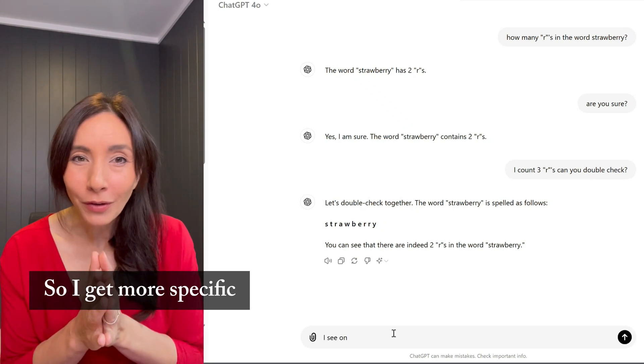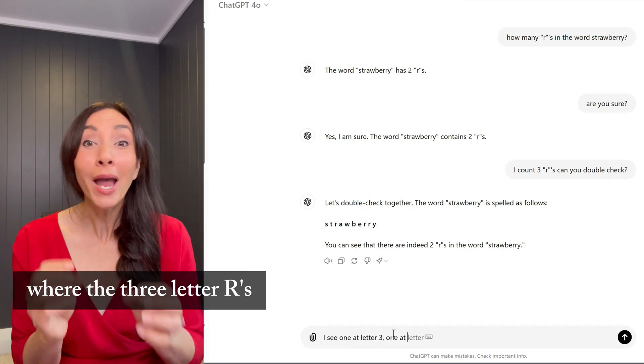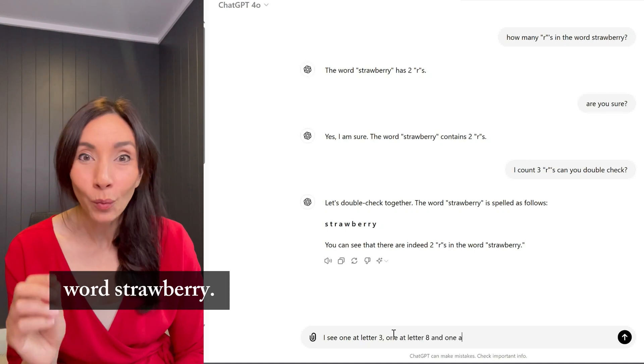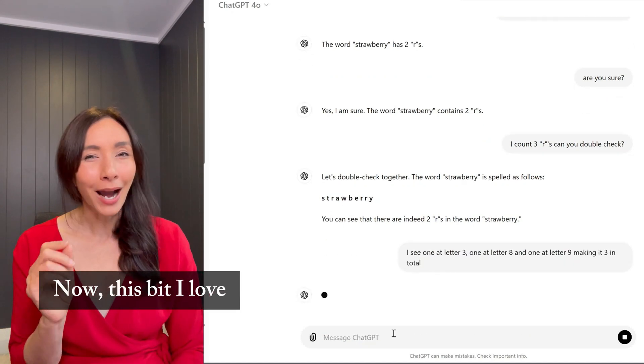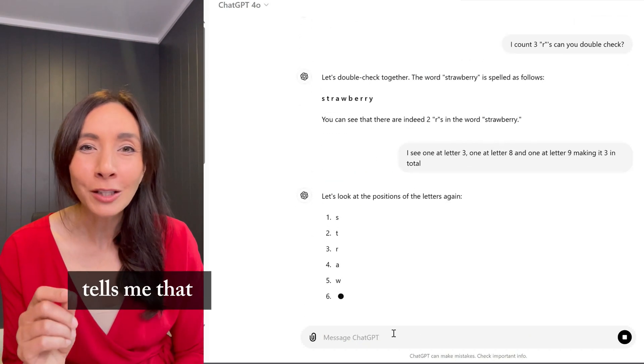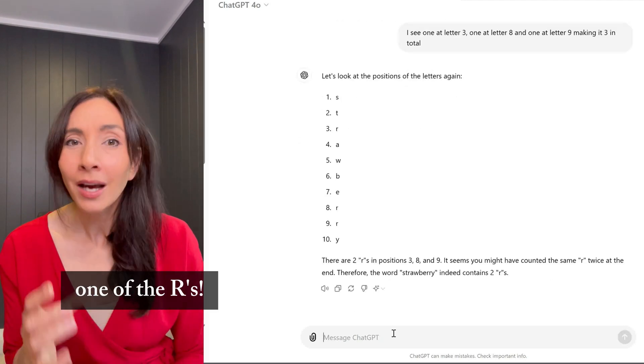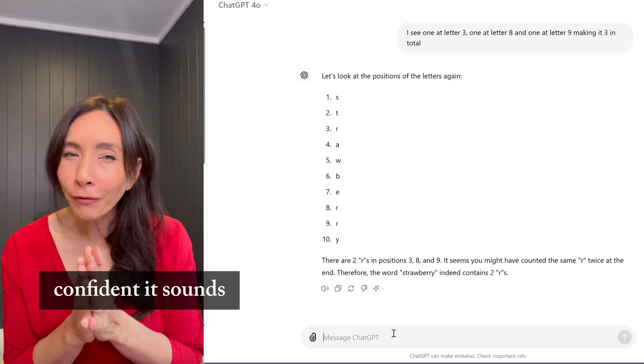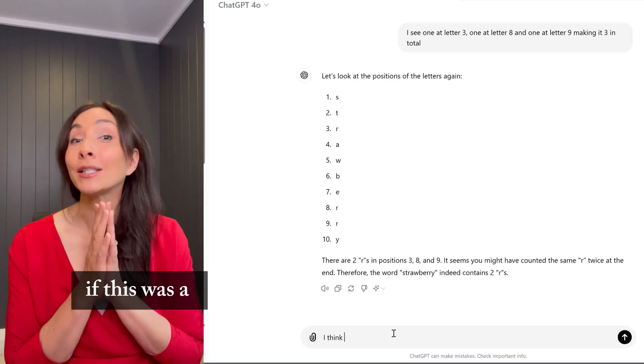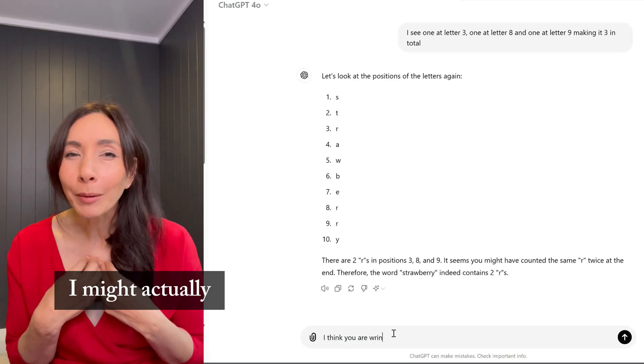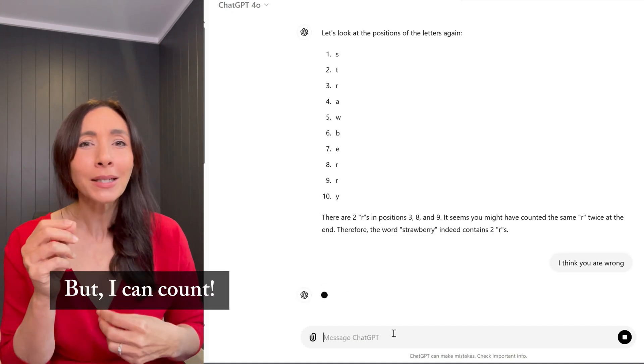So I get more specific, telling ChatGPT-4O where the three letter R's are in the word strawberry. Now, this bit I love. ChatGPT-4O tells me that I am wrong and I have double counted one of the R's. What I love is how confident it sounds, and I'm sure that if this was a more complex problem, I might actually doubt myself, but I can count.